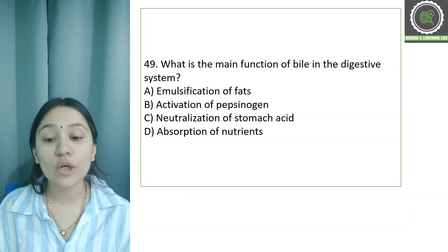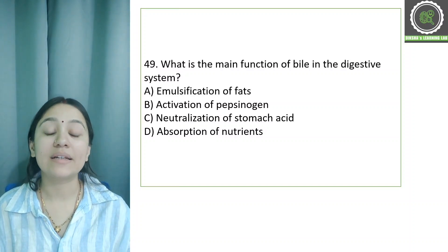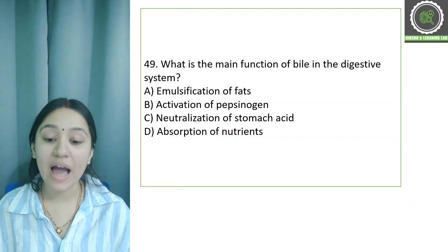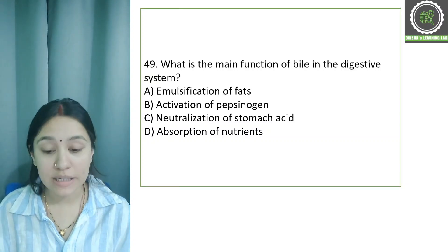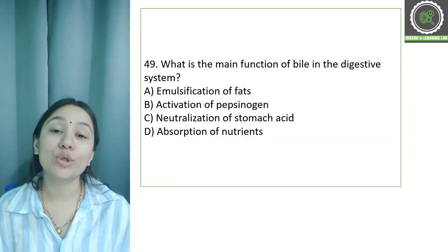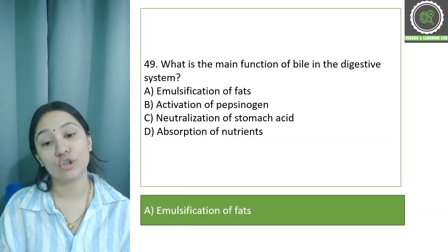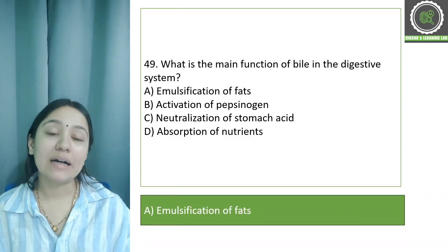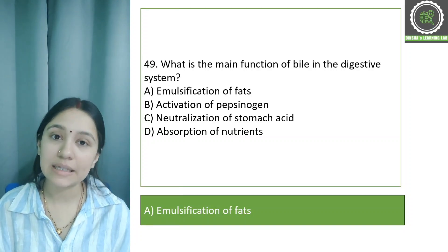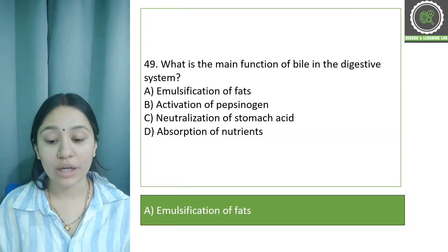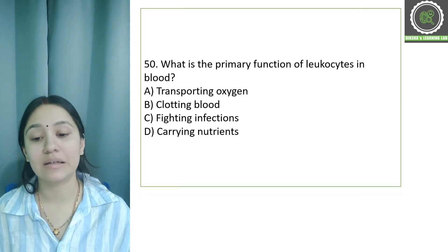Question number 49: What is the main function of bile in the digestive system? Options: A) emulsification of fats, B) activation of pepsinogen, C) neutralization of stomach acid, D) absorption of nutrients. The correct answer is option A, emulsification of fats. The main function of bile released from the bile duct is the emulsification of fats.